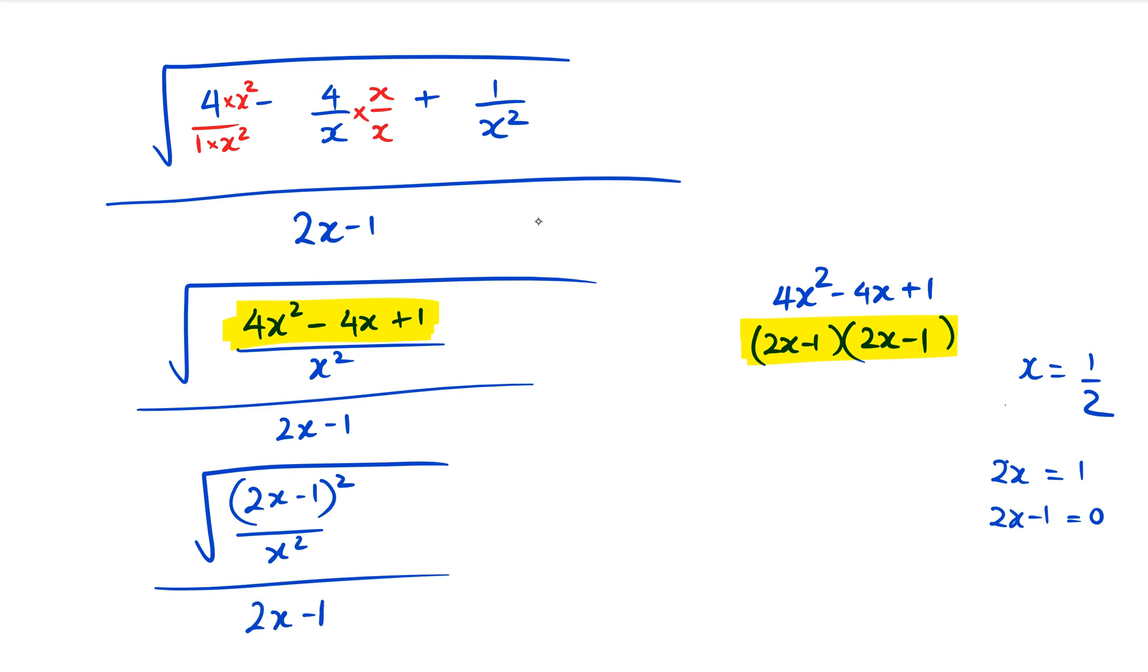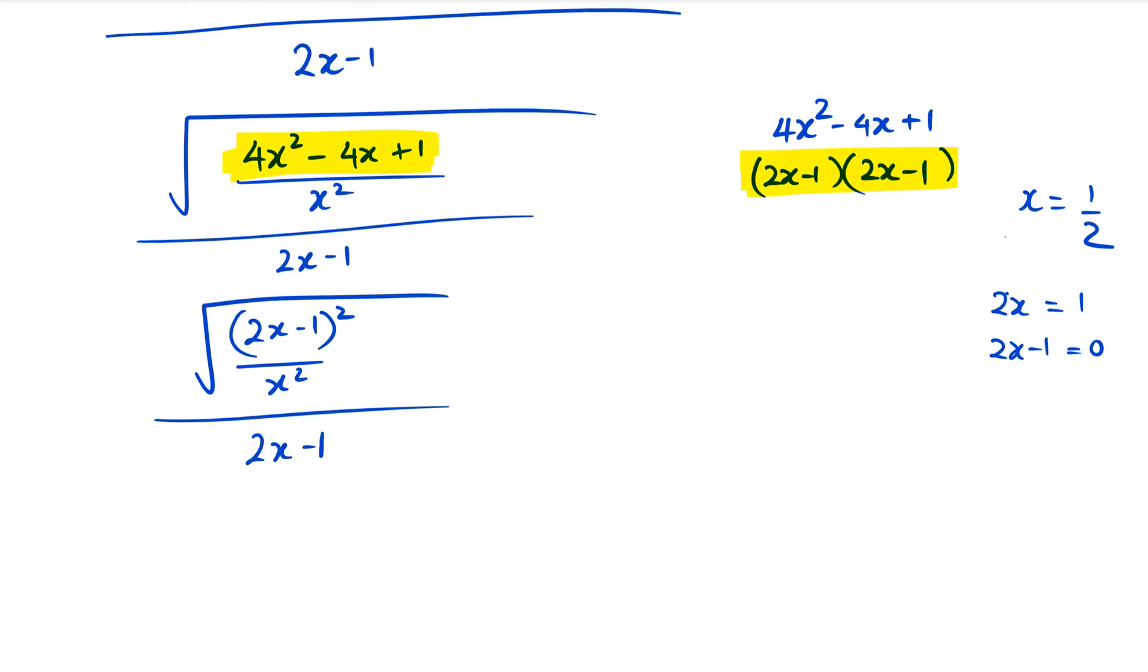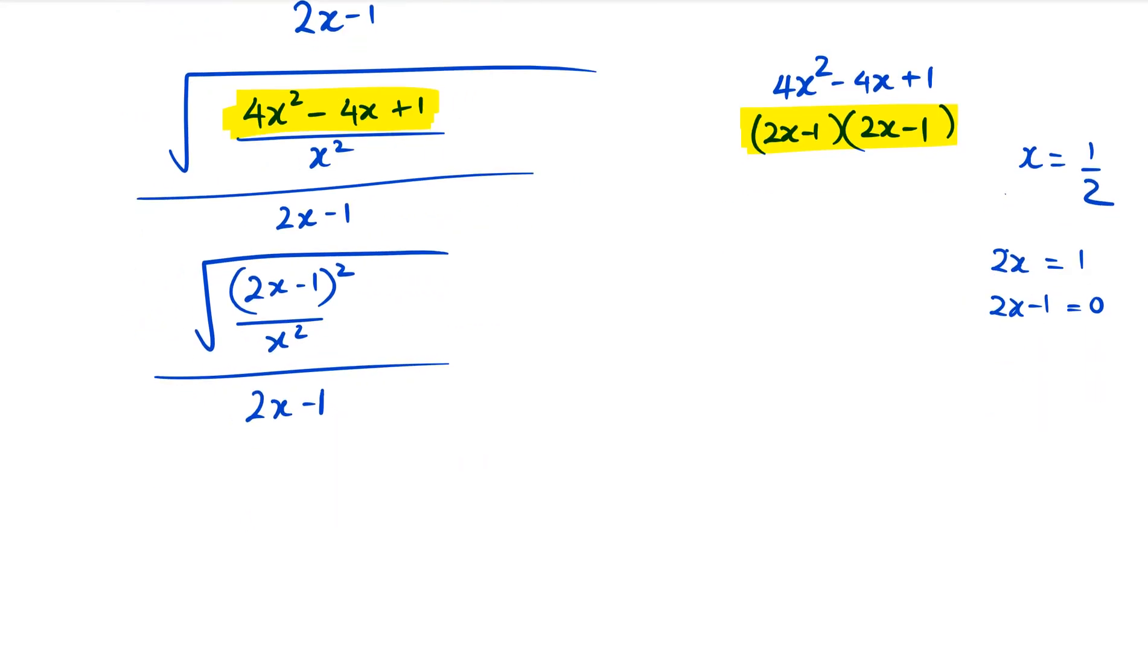That whole thing is divided by 2x - 1. Because we've got squares there and a square root symbol, we can get rid of the squares and the square root symbol to rewrite it as (2x - 1)/x.